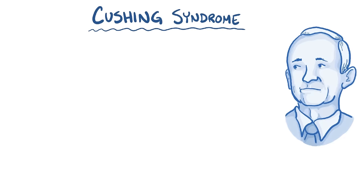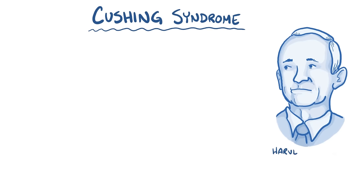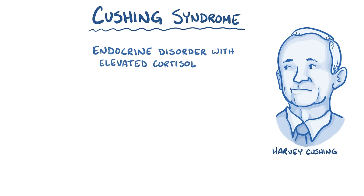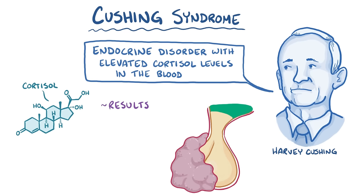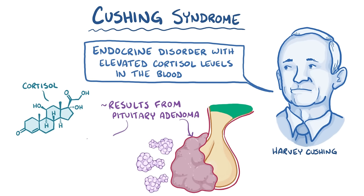Cushing syndrome, named after the famous neurosurgeon Harvey Cushing who first described it, is an endocrine disorder with elevated cortisol levels in the blood. In some cases, Cushing syndrome results from a pituitary adenoma making excess ACTH, and in those situations it's called Cushing disease.